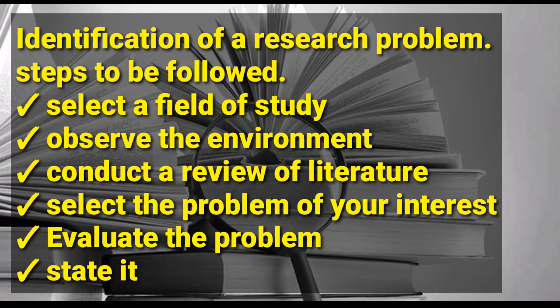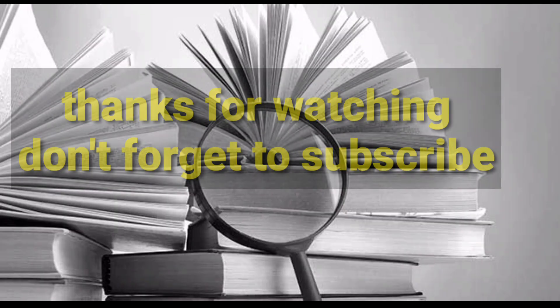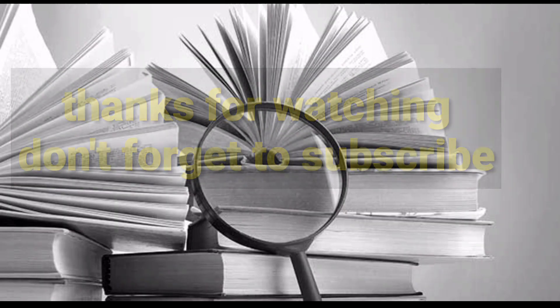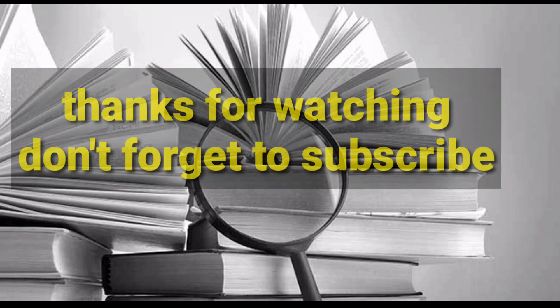After evaluating, you state the research problem. So the steps for identification of a research problem are: selection of a field of study, observe the environment, conduct a review of the literature, select the problem of your interest, evaluate the problem, then state the problem. That was all about the research problem. Thanks for watching — don't forget to subscribe, like, comment, and share with your friends. In the next video we shall be talking about variables in research.